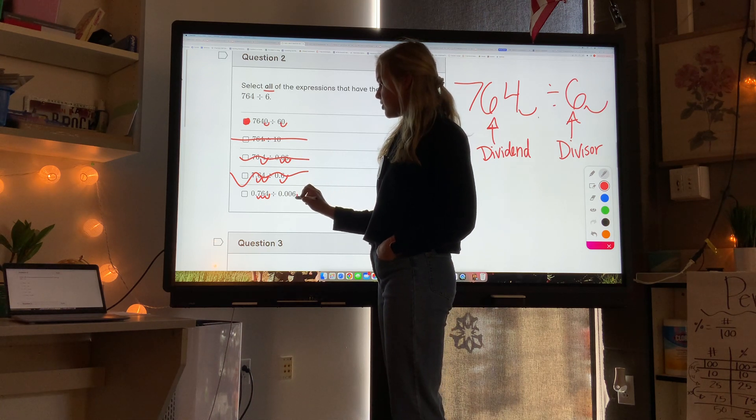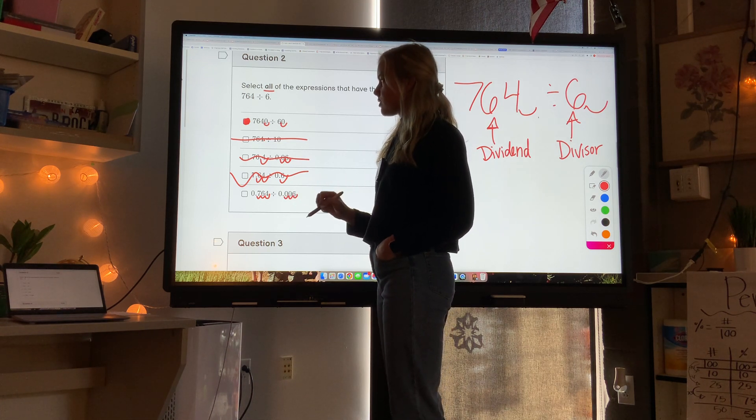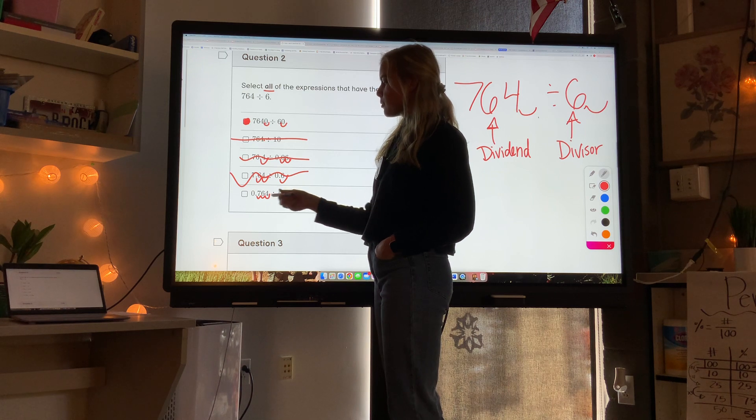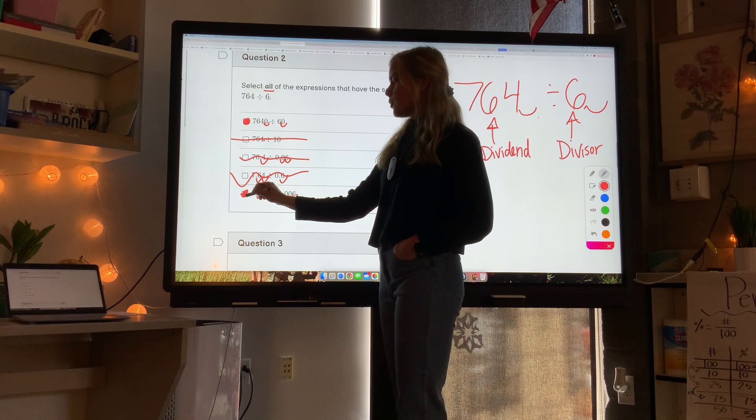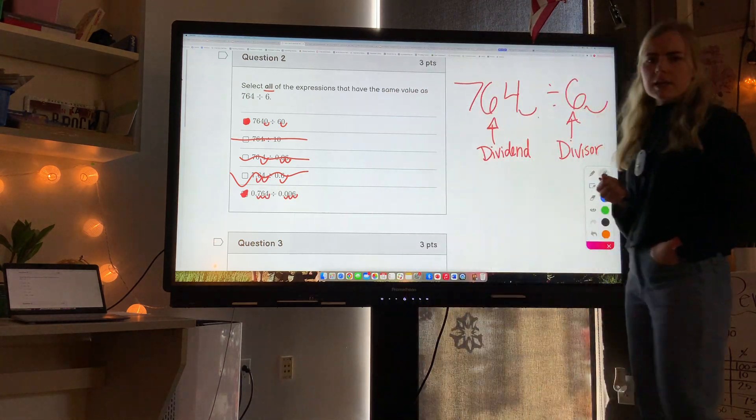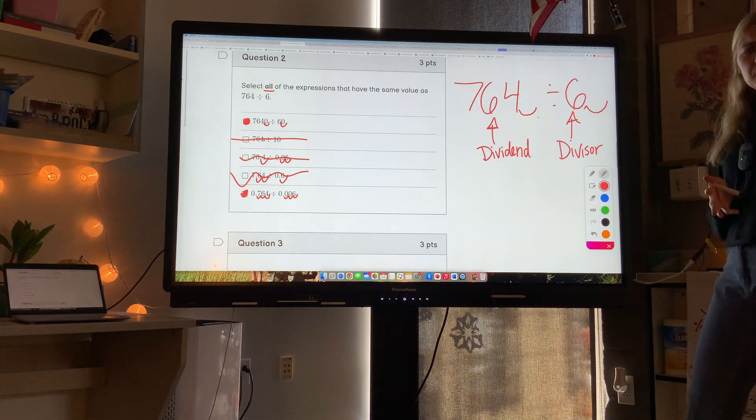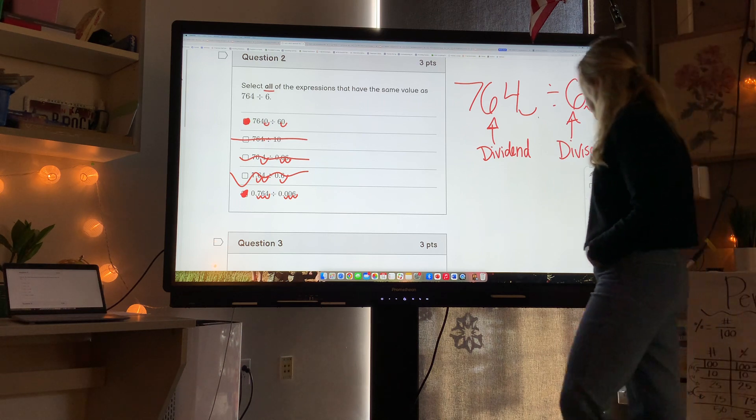If this is 764, I move the decimal 1, 2, 3 times to the left. If this is 6, I move the decimal 1, 2, 3 times to the left. Since they're moved the same number of times in the same direction, it will have the same quotient as this one. So those two will work, but not any of the other ones. Pay attention, the order may be different because it may shuffle the answer options.